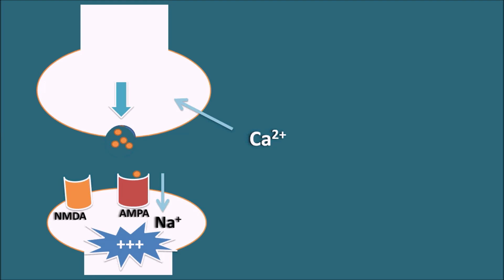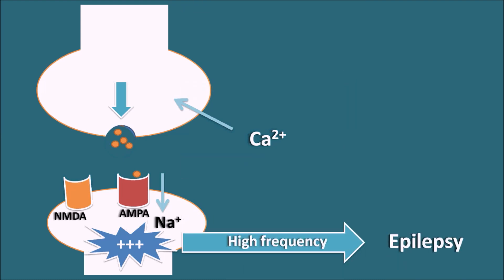What happens in epilepsy? In epilepsy, glutamate is excessively released, acting on a greater number of glutamate receptors, resulting in high-frequency neuronal excitation. This high-frequency neuronal excitation is observed as epilepsy in patients. Epilepsy is essentially a high-frequency neuronal discharge excessively exciting the post-synaptic neurons. To treat this, one goal is to block sodium channels or block AMPA and NMDA receptors, or alternatively to block glutamate release by inhibiting the calcium entry that drives exocytosis.